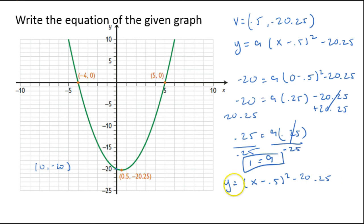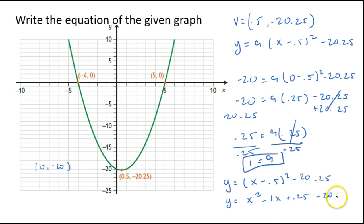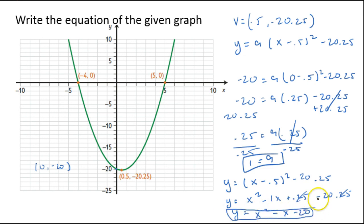If you want to convert to standard form, expand the binomial and simplify: y = (x - 0.5)² - 20.25 = x² - x + 0.25 - 20.25. The 0.25 values cancel out, leaving y = x² - x - 20 in standard form. So this is vertex form, and that is standard form — that's how you write an equation from a graph.